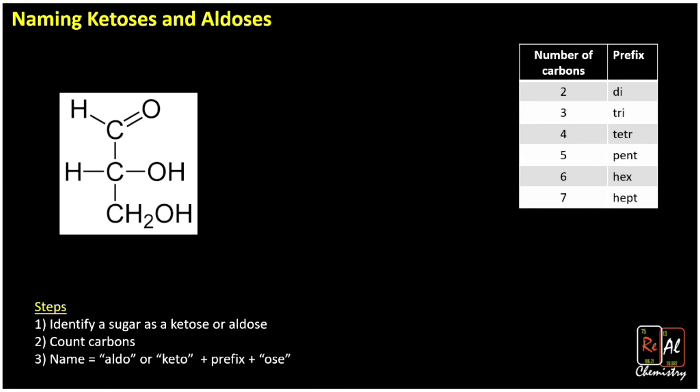So here we once again start by identifying something as an aldehyde or a ketone. This is definitely an aldose. Notice that we have this C=O bond at the end of our chain. And when we count the carbons, we have one, two, three. So this name would be aldotriose, because tri tells me that I have three carbons.